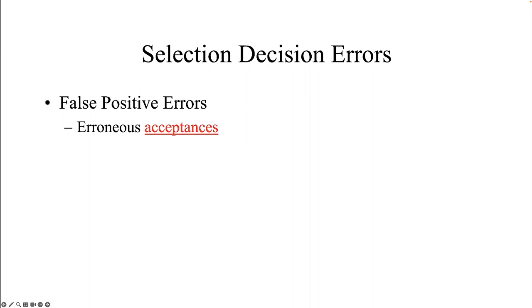The presence of error can lead to two types of selection decision errors. The first is false positive errors — erroneous acceptances of job applicants. A false positive means that an individual is hired but should not have been. The applicant successfully passes through all stages of the selection process but is then unsuccessful on the job. Think about a time when your organization hired an individual that turned out to be incompetent — what effects did that poor hiring decision have on profitability, not to mention co-worker morale?